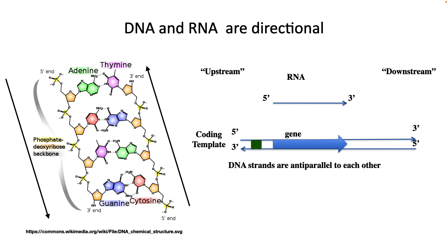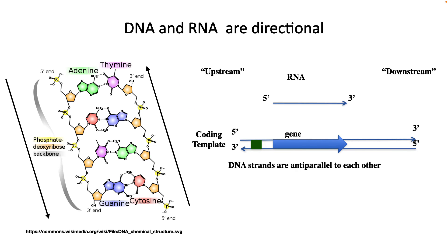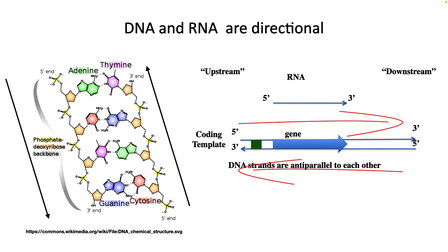Another important fact is that DNA and RNA are directional. DNA and RNA have start sequences and stop sequences, and processing is always 5' to 3'. This directionality is true for all reactions involving them, be it replication, transcription, or translation. Also, the DNA strands are anti-parallel to each other, with the 5' to 3' strand on each side pointing in the opposite direction.